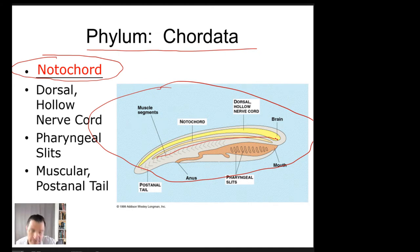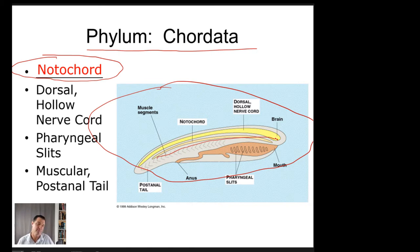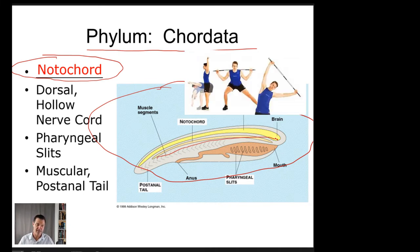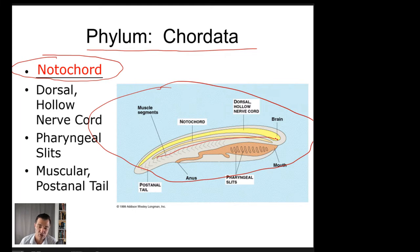The notochord reminds me of an exercise device they used to sell — a plastic flexible rod you hold and shake. It gives the animal a starting balance point and some rigidity, so muscles can attach to it. That's the notochord. Then, dorsally — further toward the back — we have the dorsal hollow nerve cord, which also runs the length of the animal.